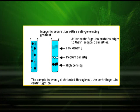In isopycnic centrifugation, also known as equilibrium density gradient centrifugation, the particle gets separated when its density becomes equal to the density of the gradient media, and that particular point is known as the isopycnic point. Now let us discuss the types of centrifuge.